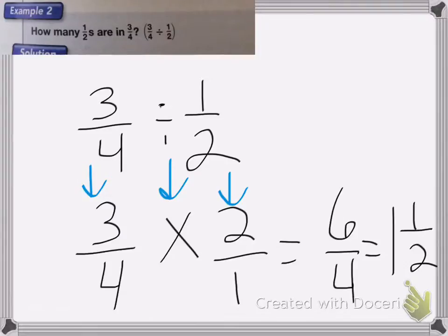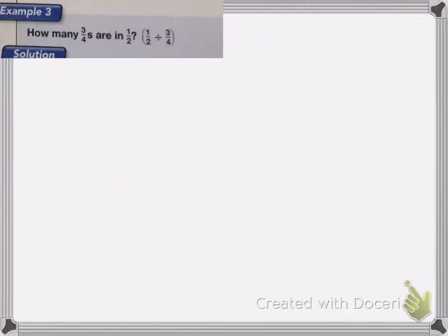So remember the trick with dividing fractions is flip and multiply. So in this one, it's how many 3 fourths are in 1 half, so 1 half divided by 3 fourths. So again, we have 1 half divided by 3 fourths.